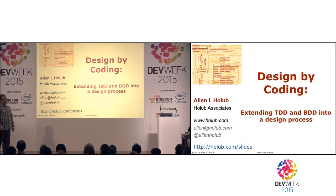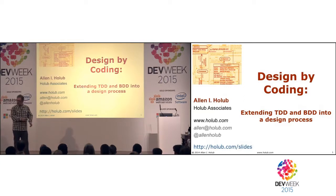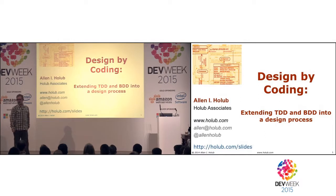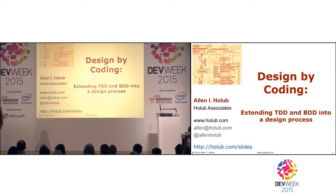A continuing thread through my sessions at this conference is that at the center of this is object-oriented thinking — modeling the domain to produce a program and getting a one-to-one correlation between the domain model and the software. For example, in an ordering system you'll have an order object, a customer object, address objects, line items, inventory items — all domain-level concepts mapping directly to classes. The idea is to keep that one-to-one correlation without a massive upfront design effort or a massive pile of documentation.